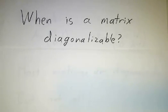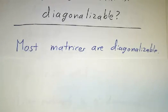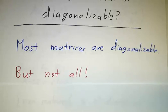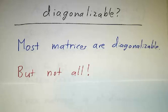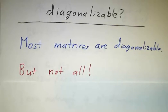In this video, we're going to consider the question of when a matrix is diagonalizable. Now, most matrices are diagonalizable, but there are some exceptions. Even if you allow complex eigenvalues and complex eigenvectors, there are some matrices that simply do not admit a basis of eigenvectors.